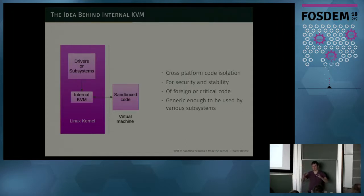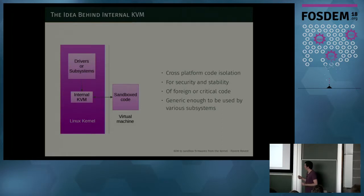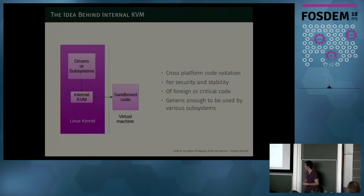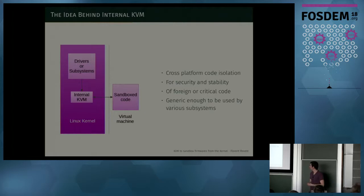Everything is almost there, but KVM hasn't been conceived to be used by the kernel itself or by various subsystems, so we had to do some adaptations. The objectives of internal KVM are: it's meant to be cross-platform, standardized across different architectures, so that the same subsystem can use virtual machines on ARM or x86. It can be used for security but also for stability, because code that touches system registers can cause problems. The API is meant to be generic so that every kernel maintainer can use it to sandbox something.